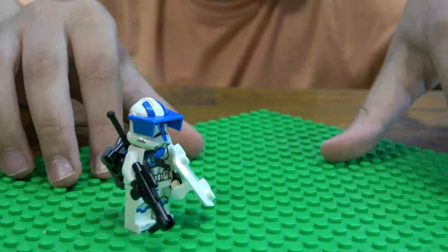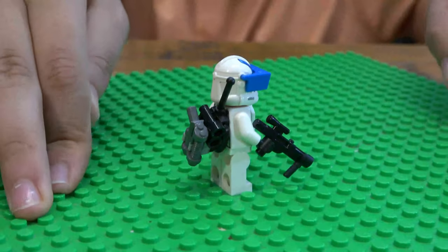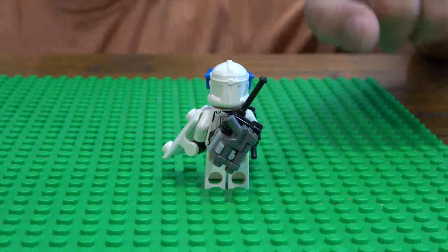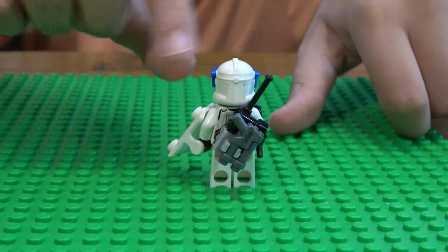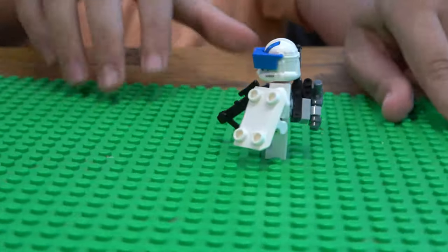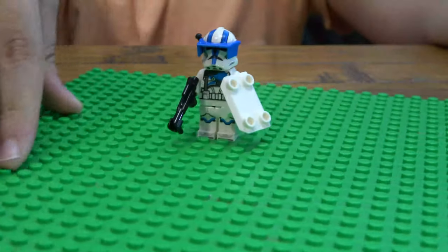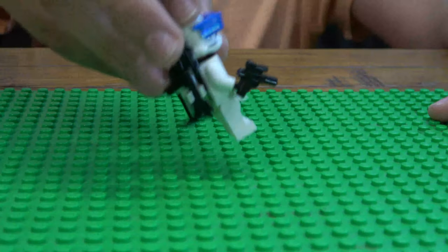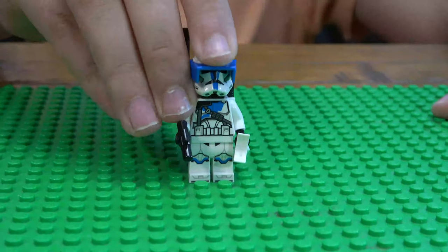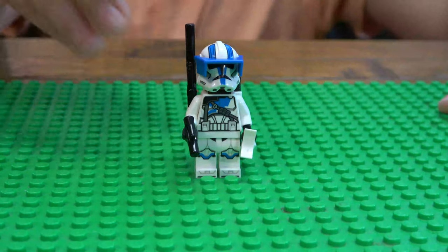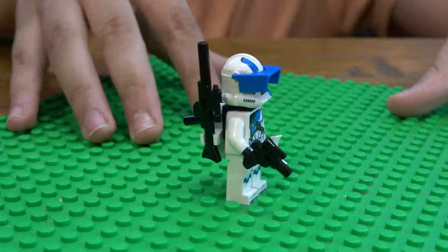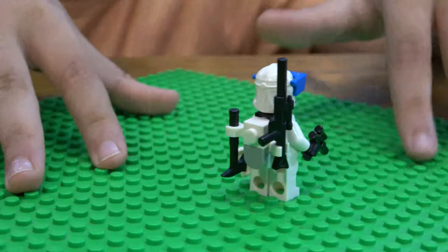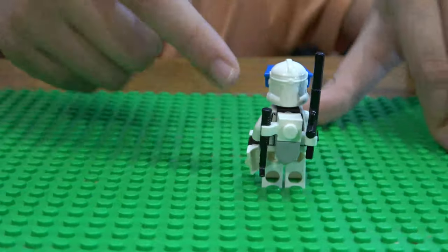And then we can also get like another 501st heavy gunner with a shield and a nice gun attachment and a nice backpack and some helmet attachments as you can see. And then we have a 501st heavy trooper, not a gunner. As you can see, he's not a heavy gunner because all he has is a pistol and a sniper and an axe.